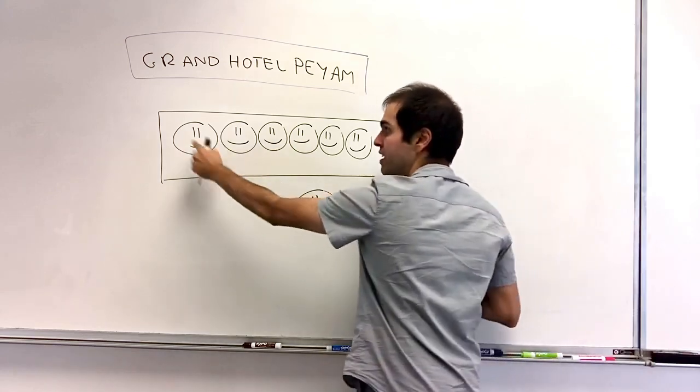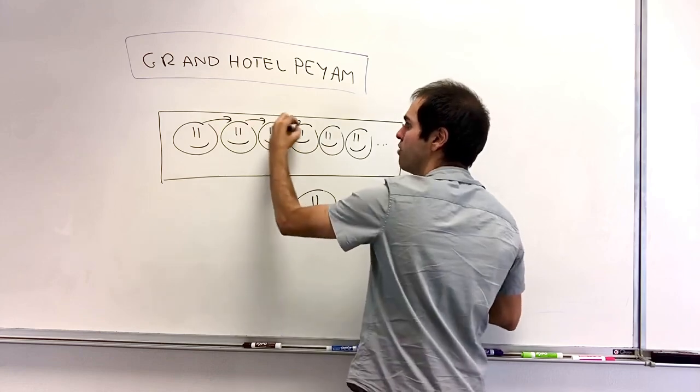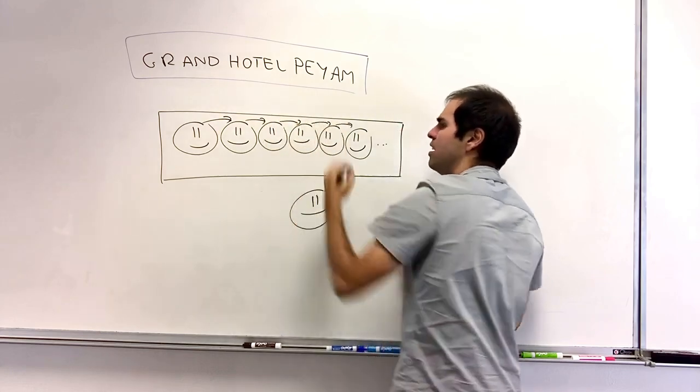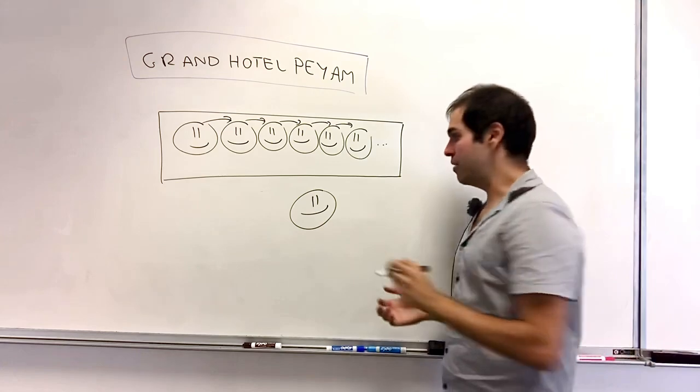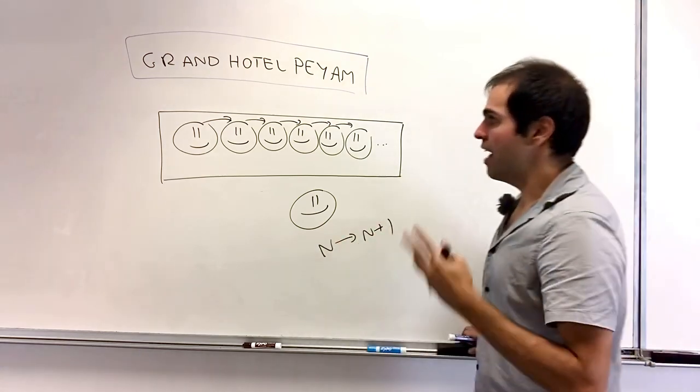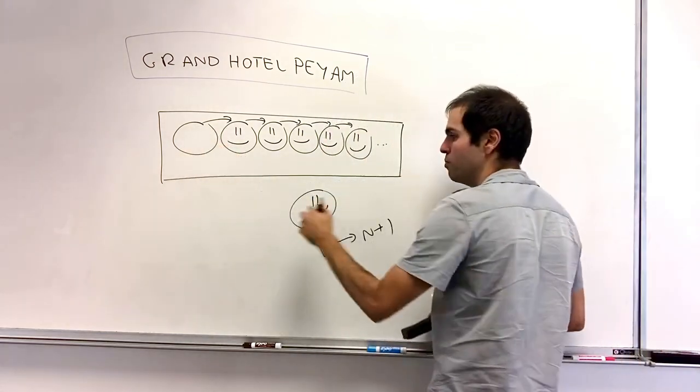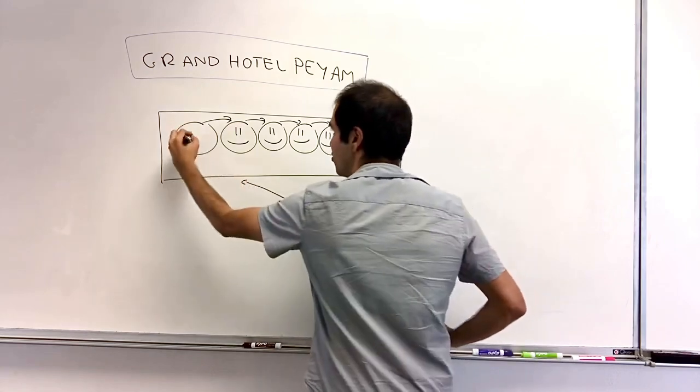For the first guest, tell them to move to room two. The second one, tell them to move to room three, et cetera. And the nth guest, tell them to move to room n plus one. Then everything is full except for the first room, and you can simply put that passenger in the first room.